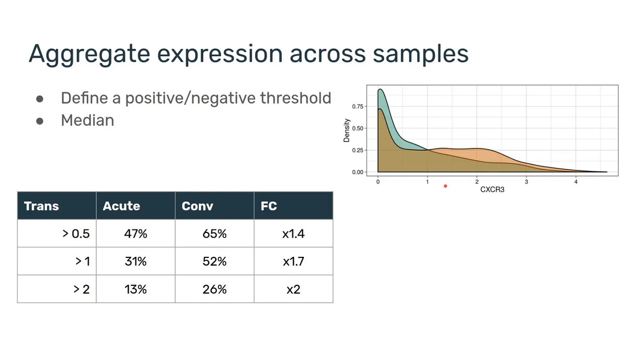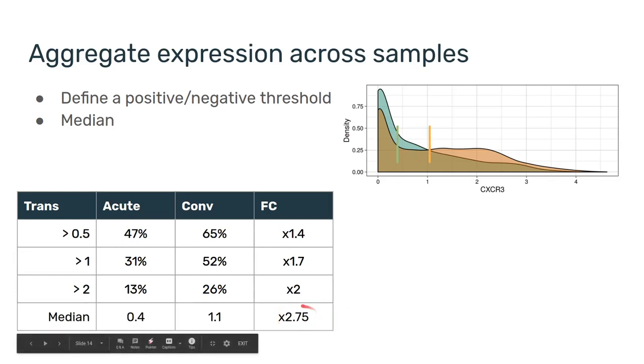Another option, and that's the one that you can find in the diffcyt paper, I believe in Citrus as well, and potentially in the F1000 workflow—all of these are in the video description—is to use the median. And if we do this, here's the median for each one of the distributions, and we'll see a fold change of 2.75.